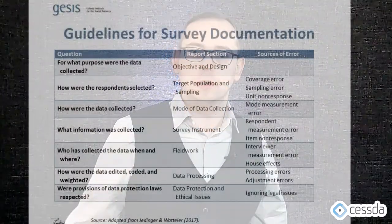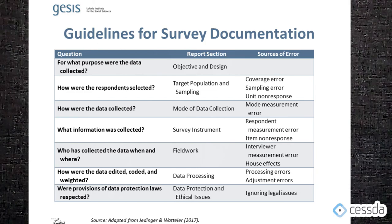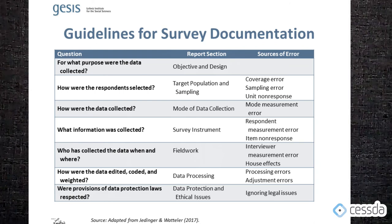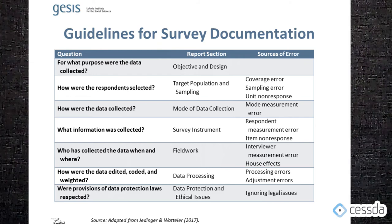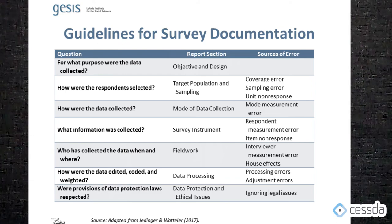Let's take a look at common mistakes or errors in terms of the total survey error approach, which might appear during your survey research project, and how they pertain to different sections in your methodological report. The first question is: for what purpose were the data collected? This should be included in the report section called objectives and design. Second, how were the respondents selected? This pertains to a report section called target population and sampling, important for understanding coverage errors, sampling errors, or unit non-response errors.